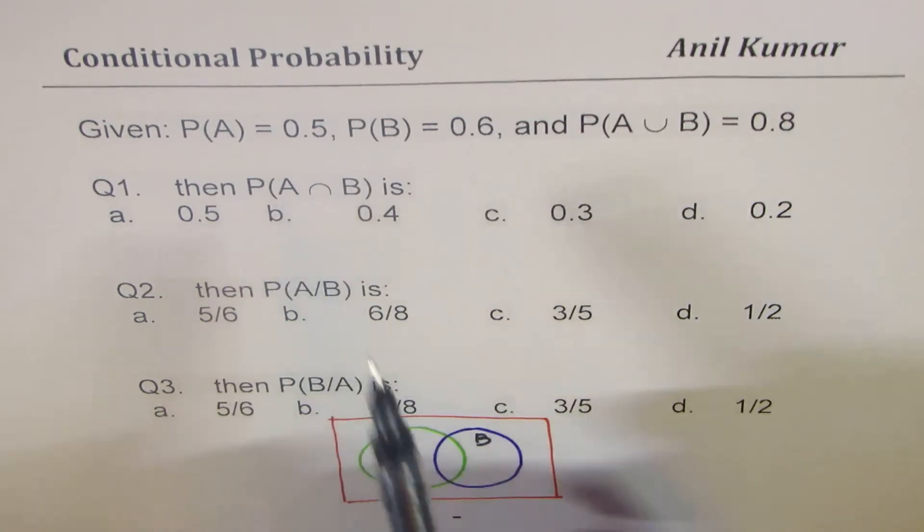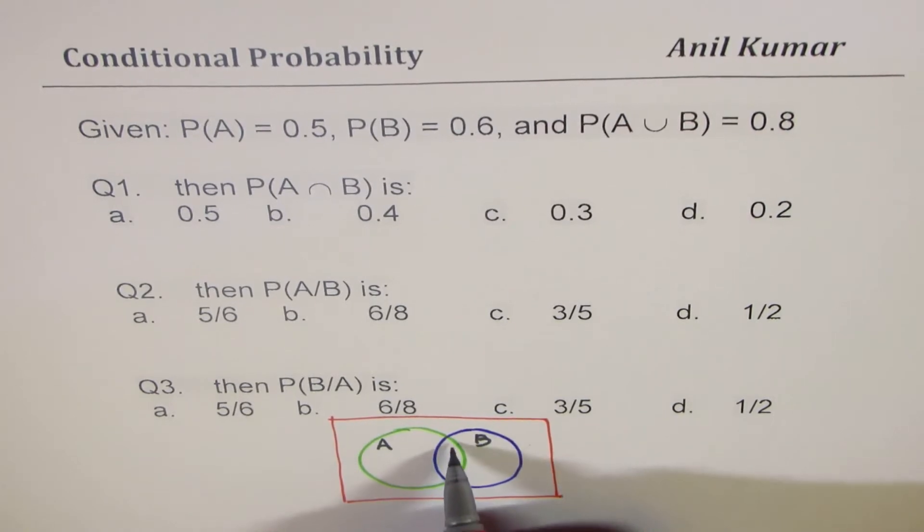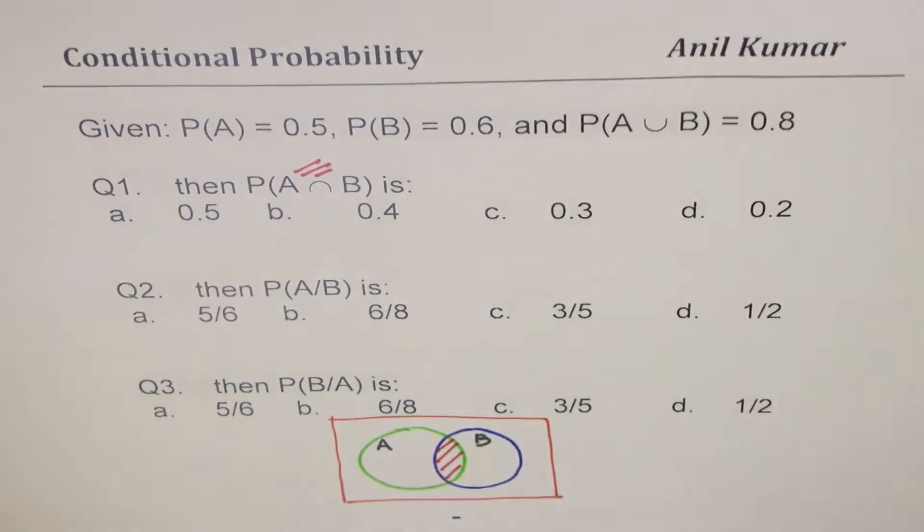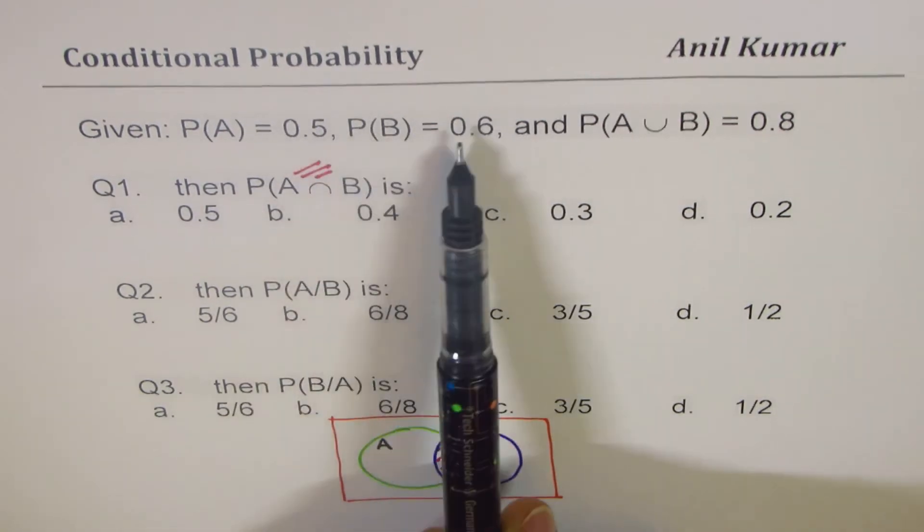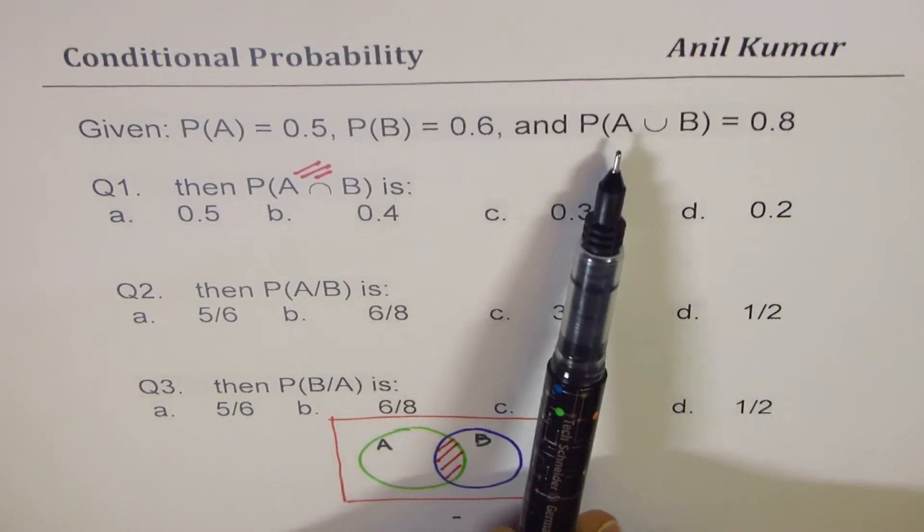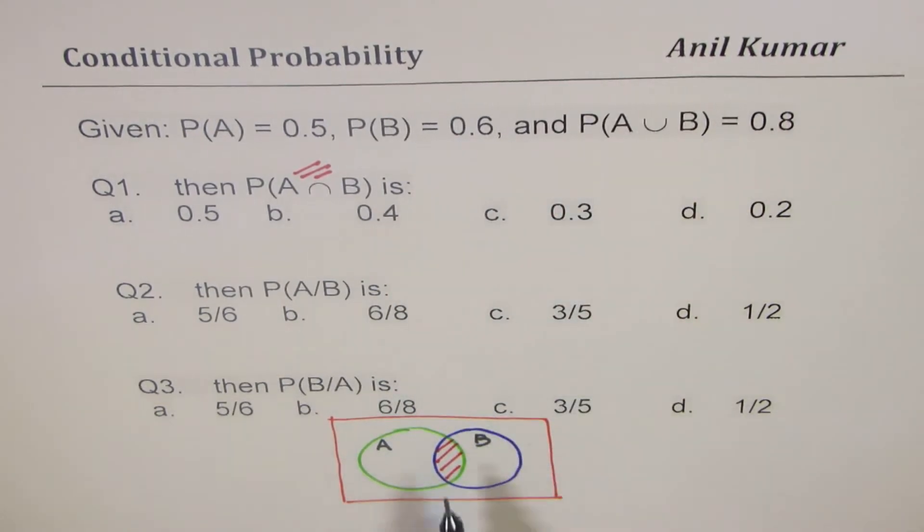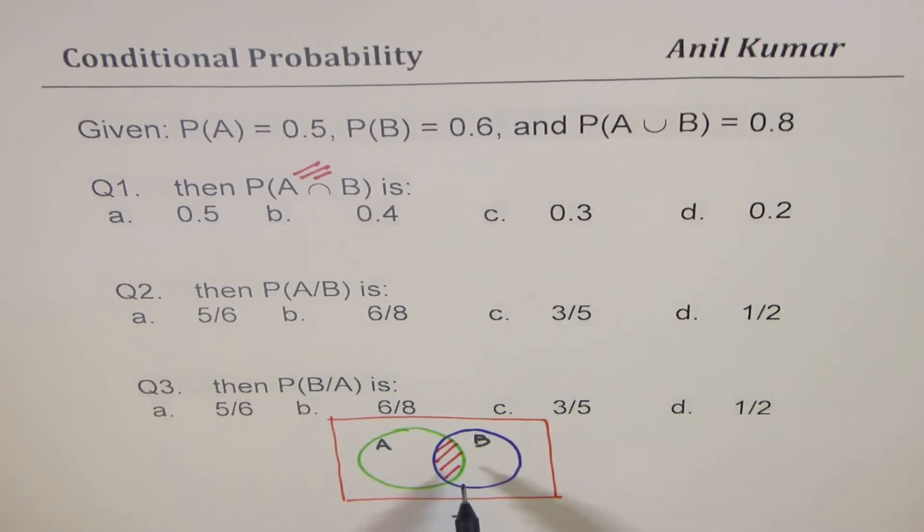What is the probability of intersection? So when we say intersection we are trying to figure out probability of this portion right, so this is the intersection we are talking about. Now clearly what you notice here is if you add these two numbers you get much more than their union, and the reason is this intersection being counted twice. So that is why these are not mutually exclusive events.